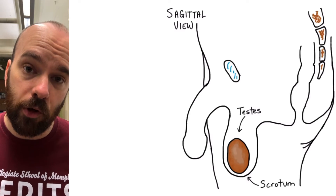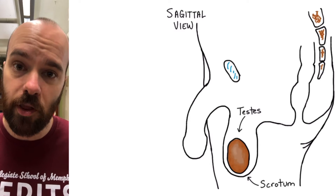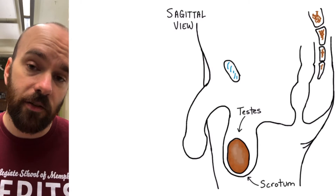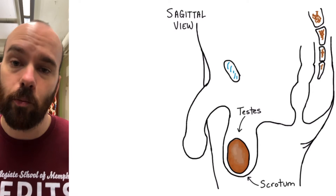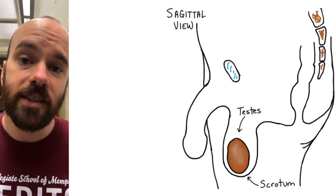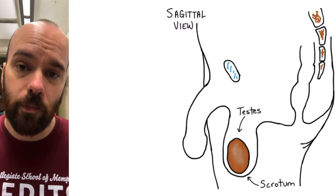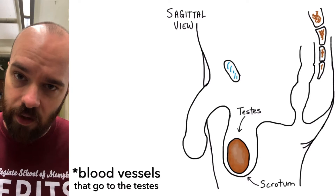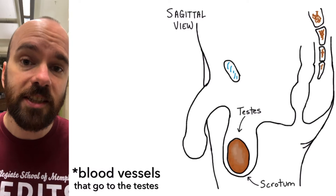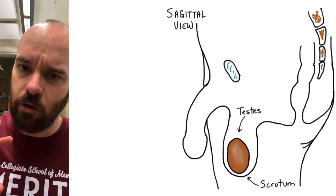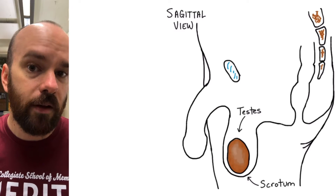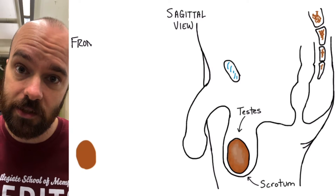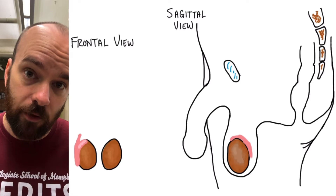The scrotum is essentially a patch of skin that helps regulate the temperature of the testes to maximize sperm cell production. Whenever it's cold, the scrotum will contract and pull the testes up closer to the body to keep them warm. Whenever it's warm, the scrotum will relax so the testes can stay farther from the warmer temperatures of the internal body. The testes also produce testosterone, the primary male sex hormone. Whenever the testes produce testosterone, it doesn't go through the other tubes — that hormone travels directly into the bloodstream straight from the testes. The sperm cells, however, follow a different path.